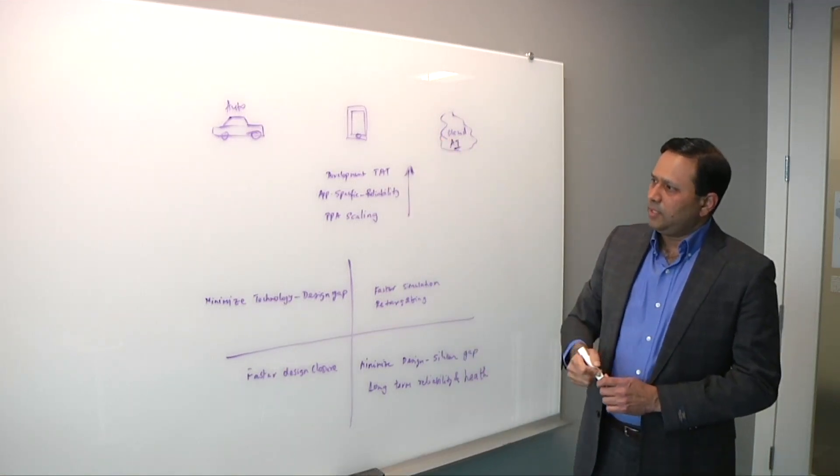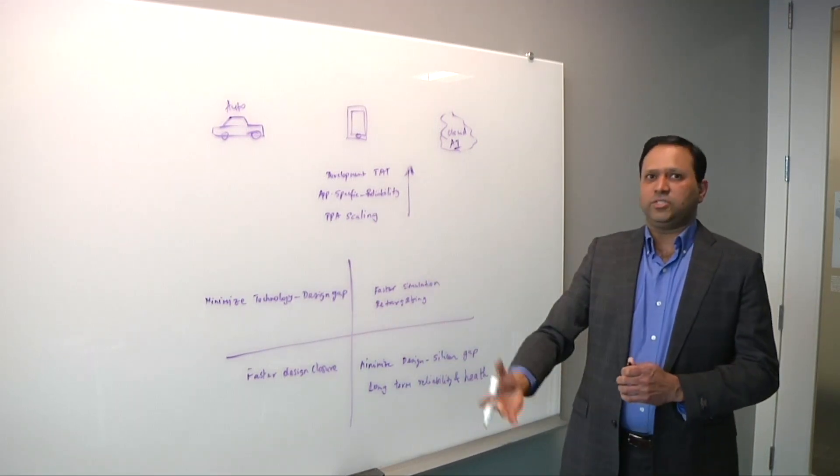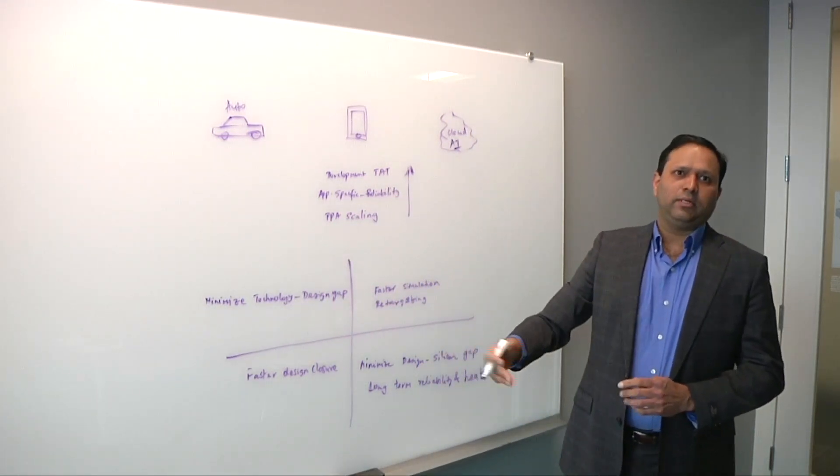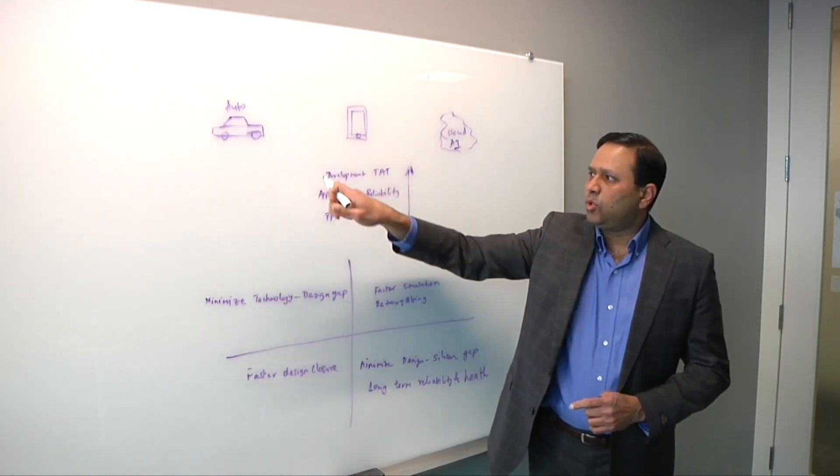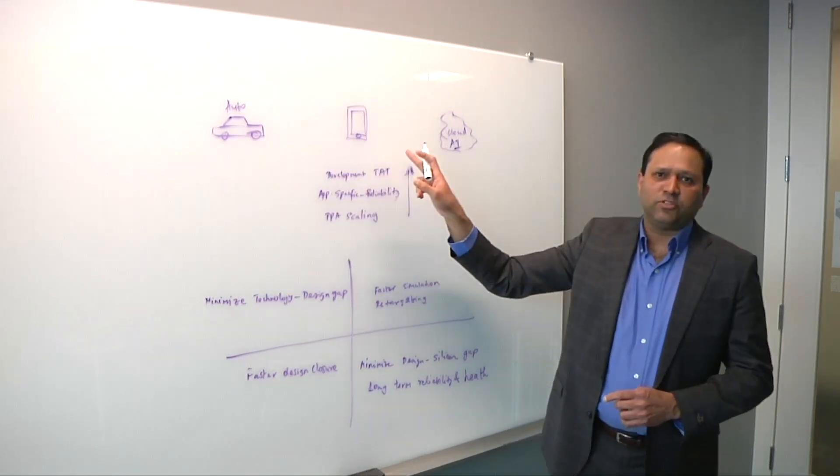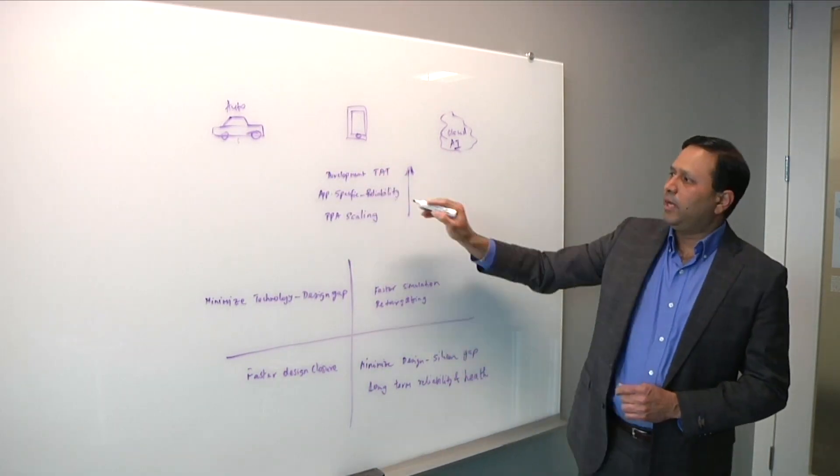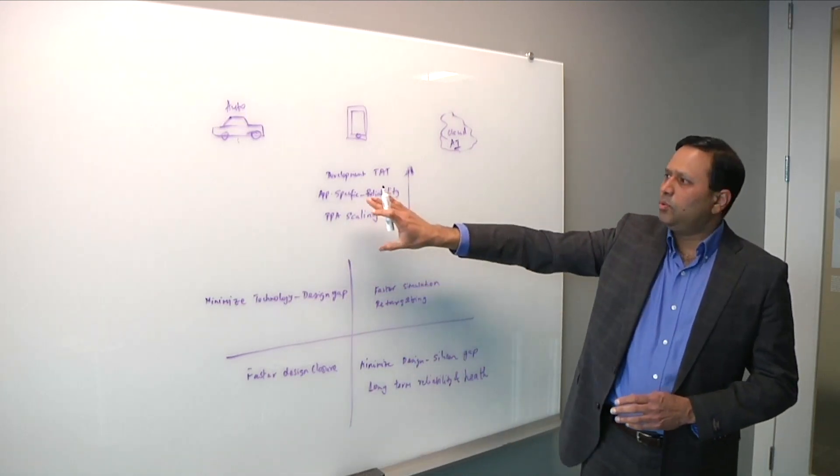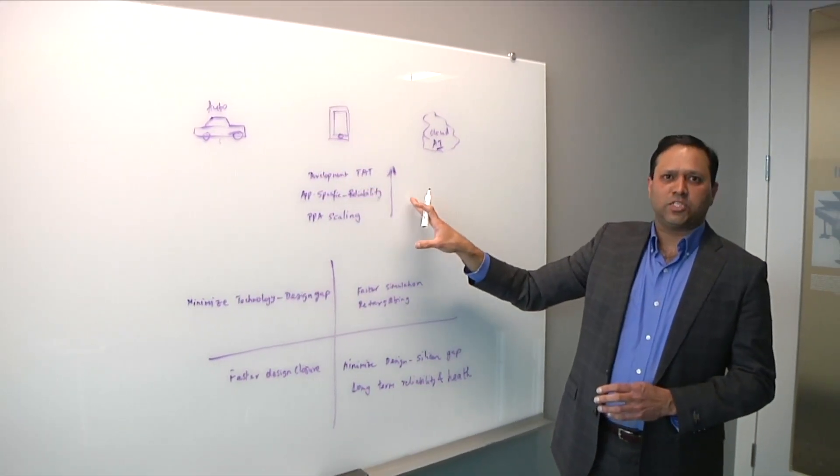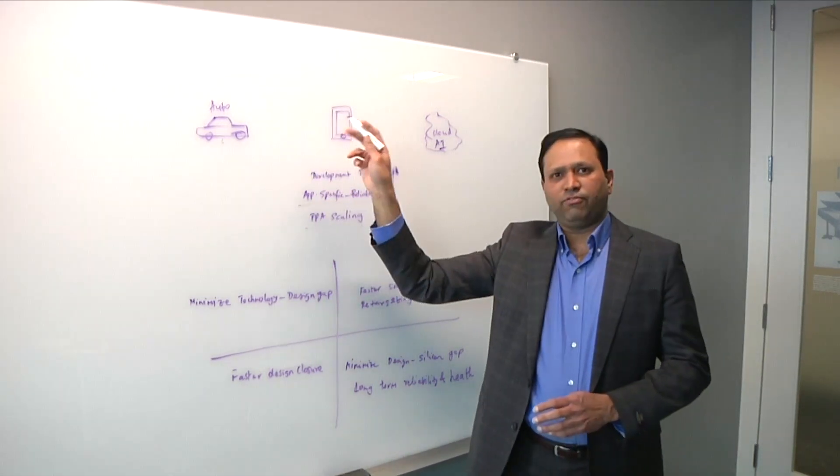So really, what you have here is many different types of memories to cater to these different application segments. So at the next level, what this means is that memory IDMs, they pursue relentlessly the PPA scaling. That is the technology scaling that kind of is the underpinning for it, right? Because they need to have higher performance, lower power, more dense, but they actually have to also take care of application-specific requirements. For example, you could have application-specific power requirements, performance requirements, but beyond that, there are some unique requirements. Like in the case of automotive, you need more reliability, right?